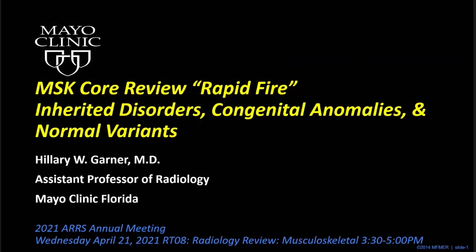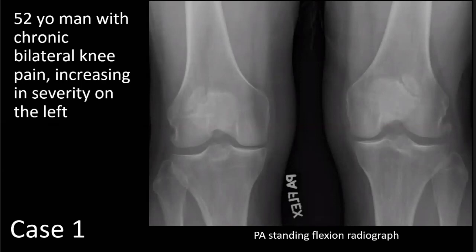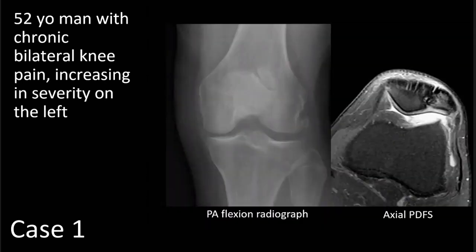Good afternoon. All the cases I'll be showing will be related to inherited disorders and/or congenital anomalies and normal variants. I have no disclosures. My first case is a 52-year-old man with chronic bilateral knee pain, increasing in severity on the left. On this AP standing flexion radiograph, we see separation of the supralateral corners of the patellae from the remainder of the patellae in a bilaterally symmetric fashion. The cortical margins along these lines of separation are well corticated. On a corresponding axial proton density fat-saturated MR image, we see a thin plane of separation that is well corticated, and the articular cartilage along this plane of separation is completely normal.